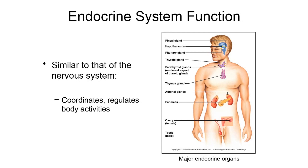The endocrine system is a little bit slower. It consists of organs that release chemicals known as hormones into the blood, and those chemicals travel through the blood to control, regulate, and have effects on organs in other areas of the body. Because we're using the blood as a medium to transport hormones, their effects are a little bit delayed — it takes some time for that hormone to travel through the blood to get to the organ it's trying to affect.